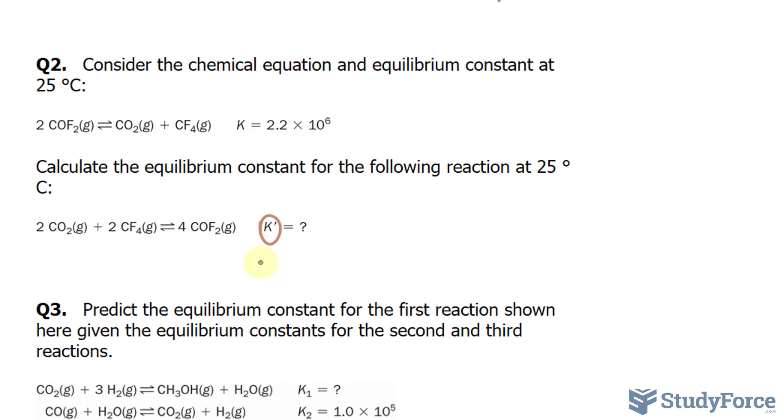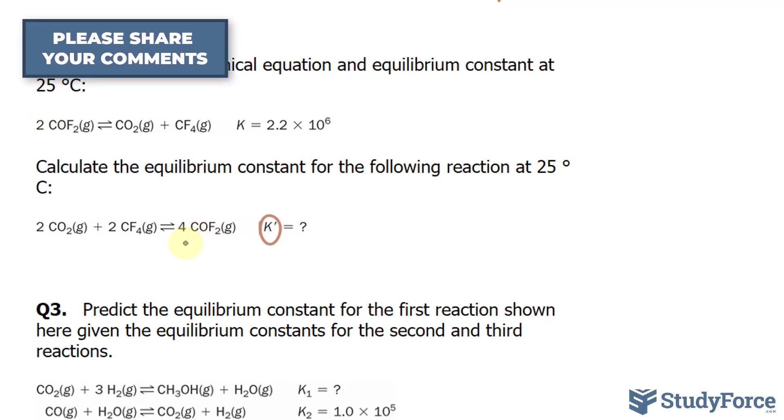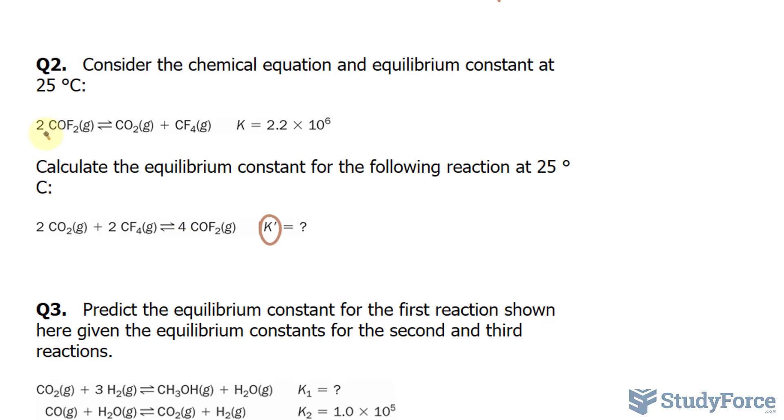Let's take a look at similarities and differences. Notice that this reaction and this one are reversed. Here we have a coefficient of 2 and over here a 4. This means that to go from here to here, we are multiplying by 2.